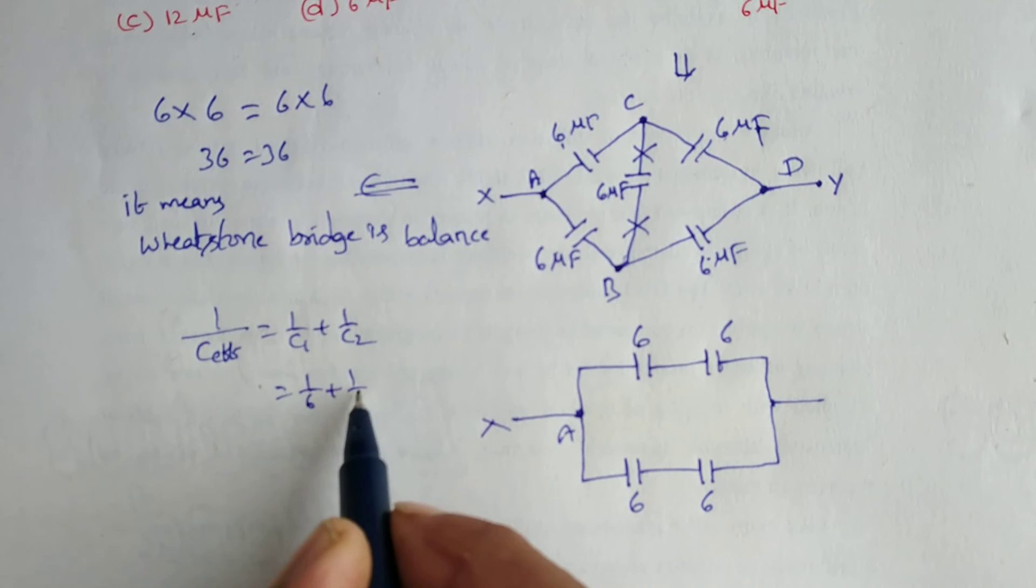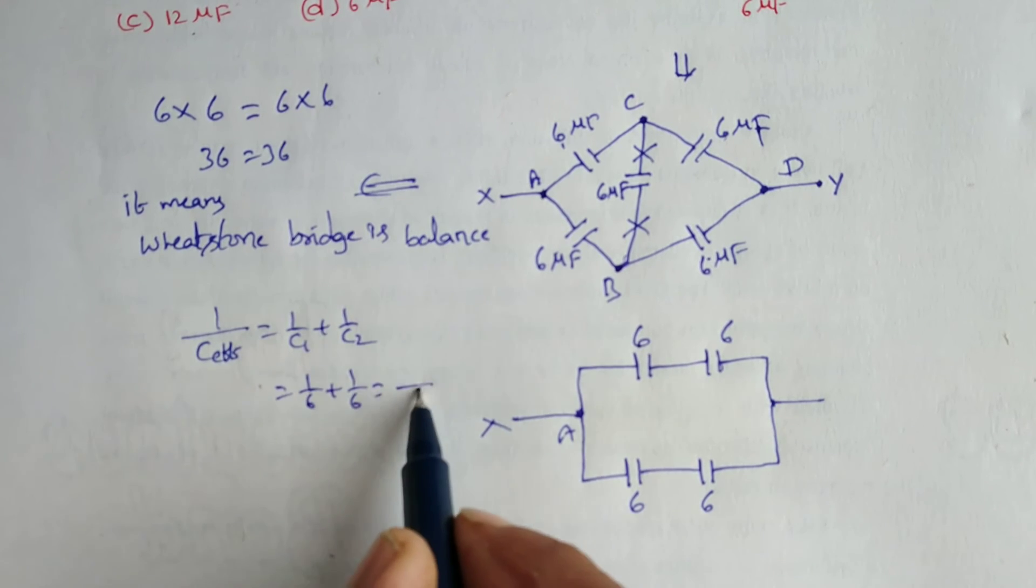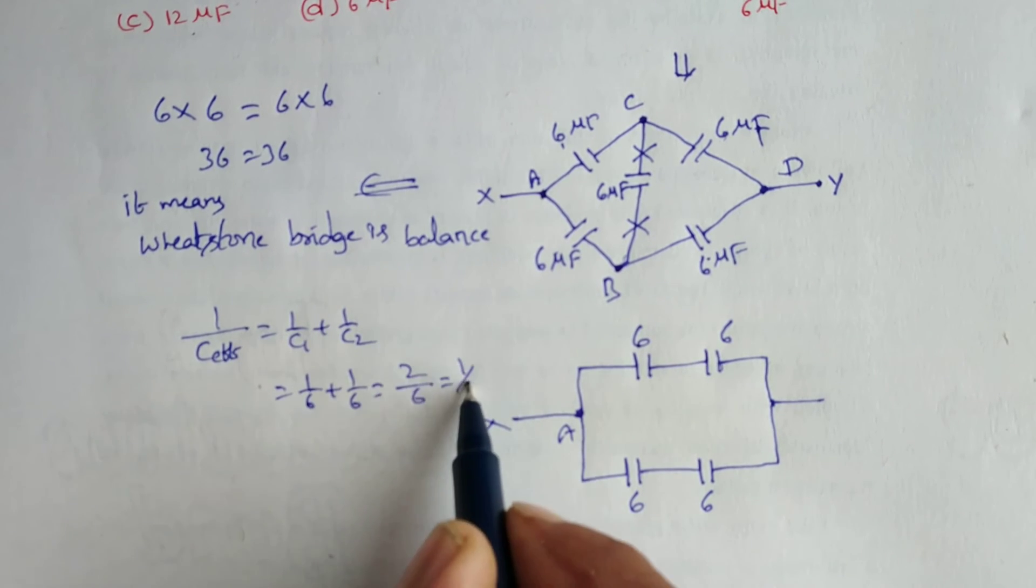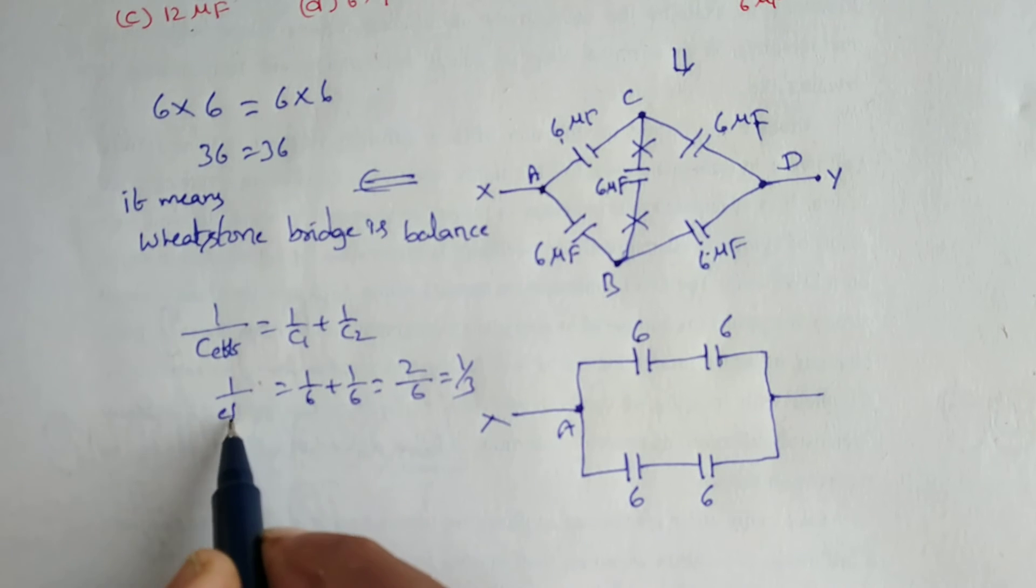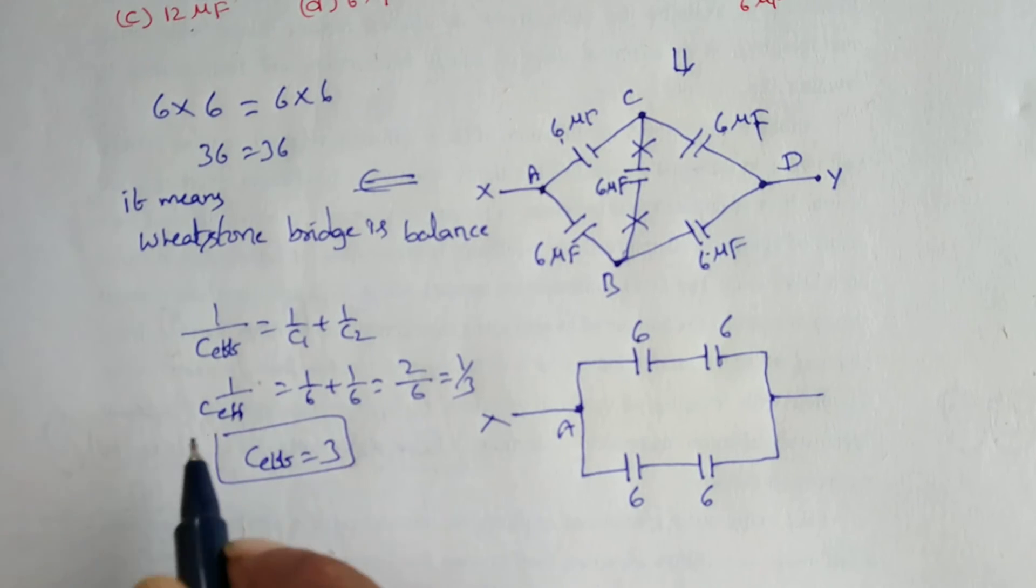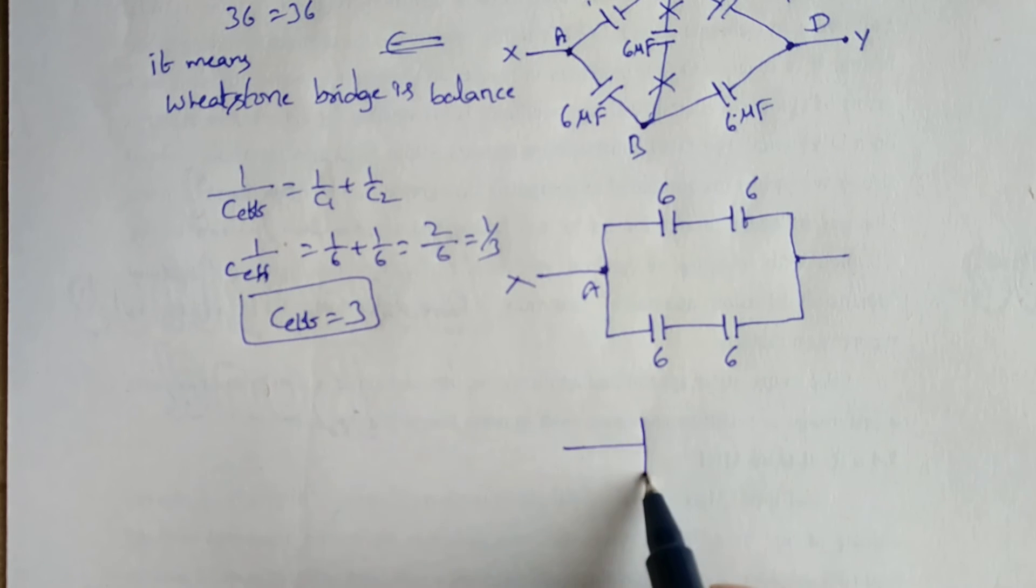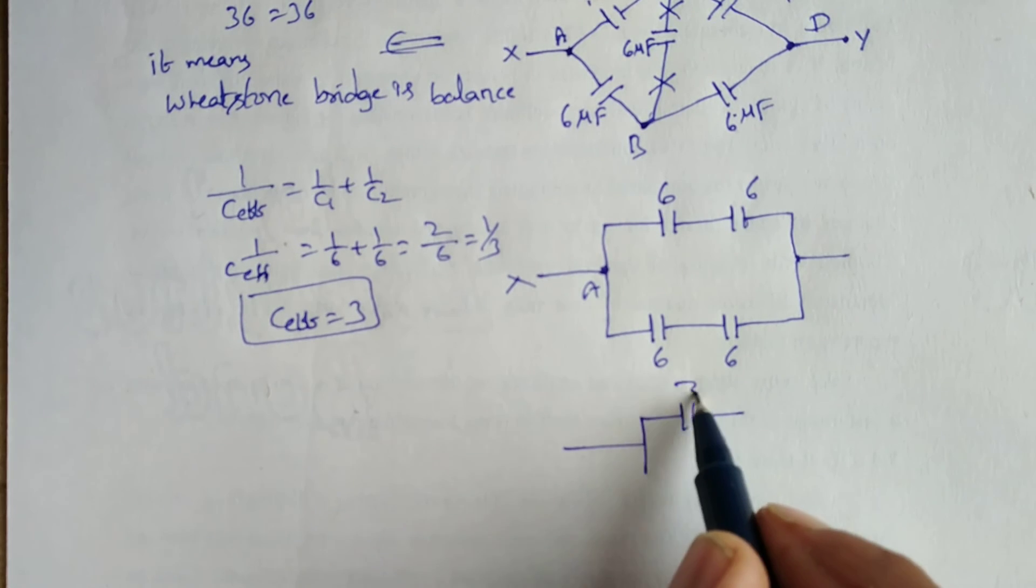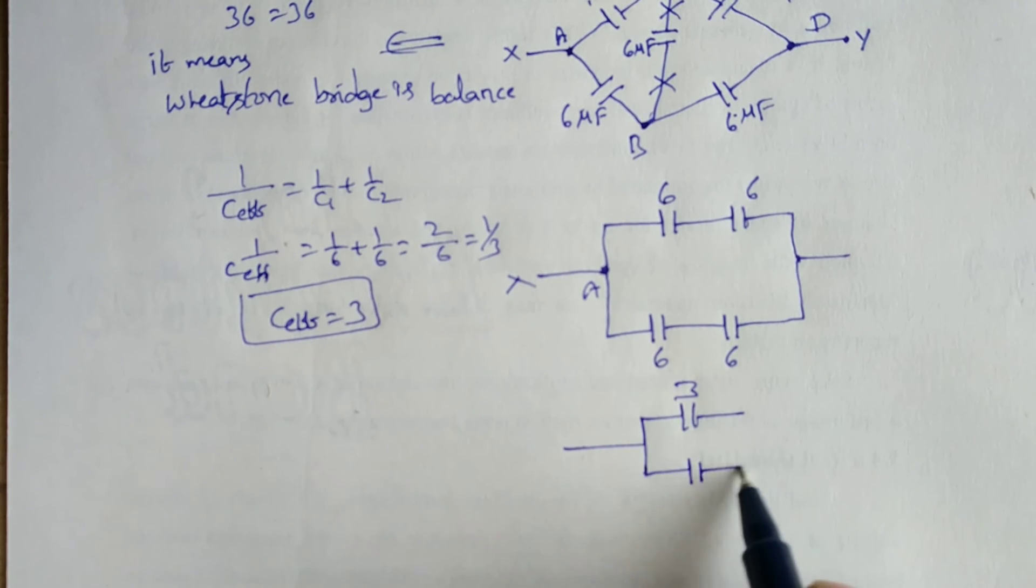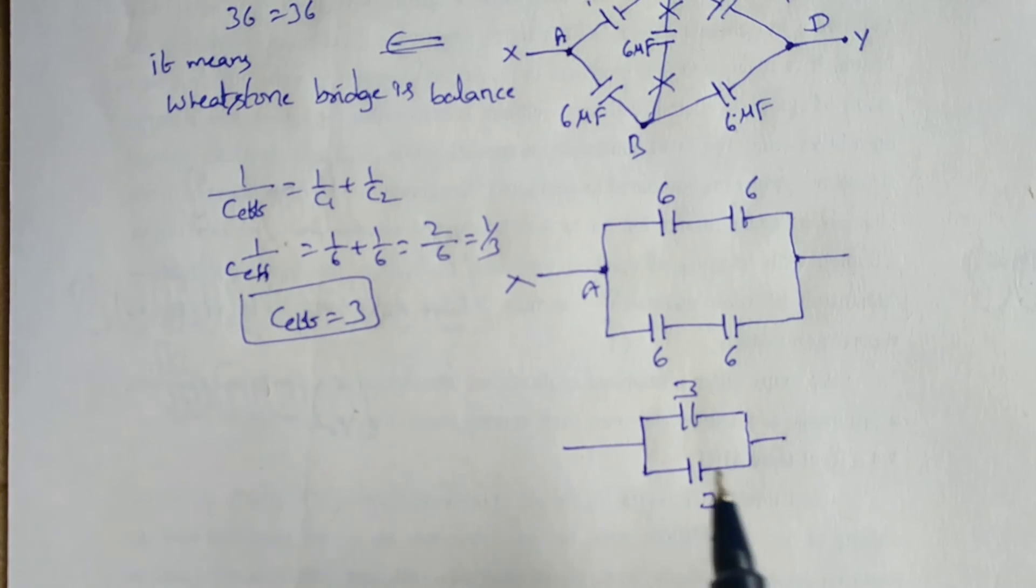All are C1 is 6, C2 is also 6. That means 1 by 6 plus 1 by 6, that means 2 by 6, that is equal to 1 by 3. So C effective is 3.